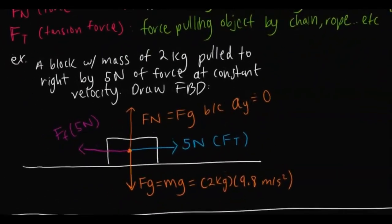Here's a simple example: a block with a mass of 2 kilograms is pulled to the right by 5 newtons of force at a constant velocity, and you want to draw the free body diagram. You draw arrows from the center of the mass. It's given that it's pulled to the right by 5 newtons. Because it's moving at constant velocity, the force of friction must oppose it in the x direction at 5 newtons as well. And since it's not accelerating in the y direction, the force normal is equivalent to Fg.